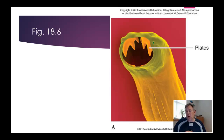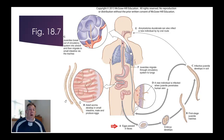There's a figure from your book that shows the route they take. Starting at point A, eggs are passed in the feces and develop outside the body in the soil. Then they burrow through the skin — so you often get these by walking barefoot over contaminated soil. The juveniles migrate through the circulatory system to the lungs, break out of the alveoli, you cough them up and swallow them, and that gets them back down into your intestine where the adults develop, produce eggs, and the cycle continues.